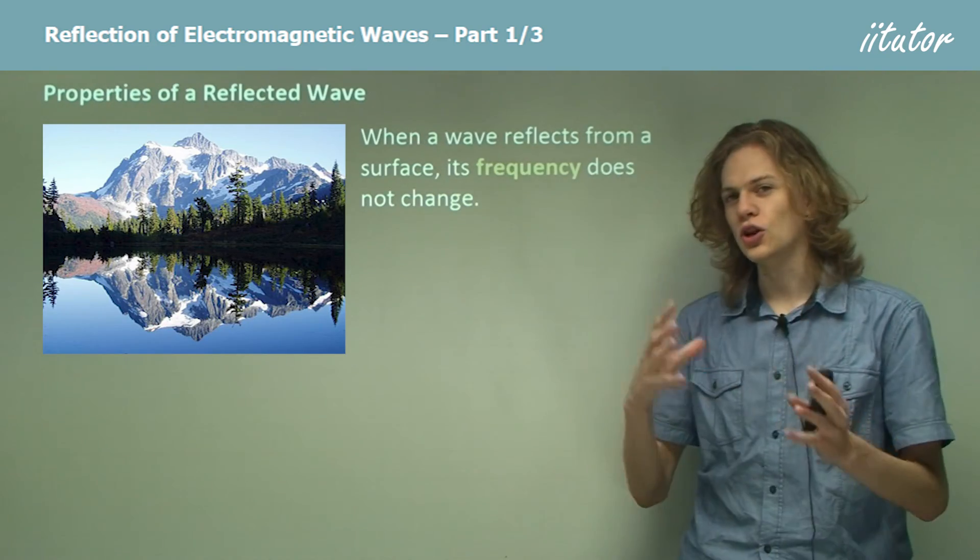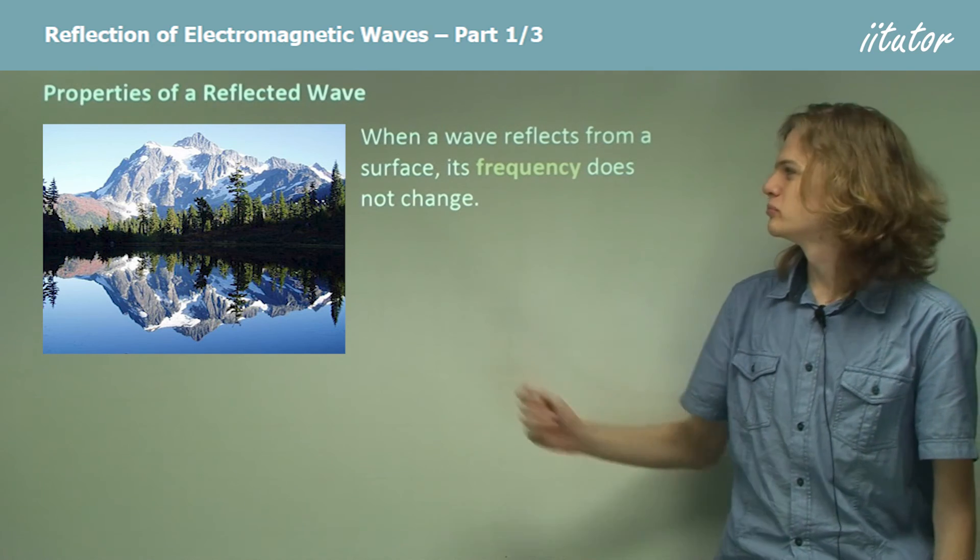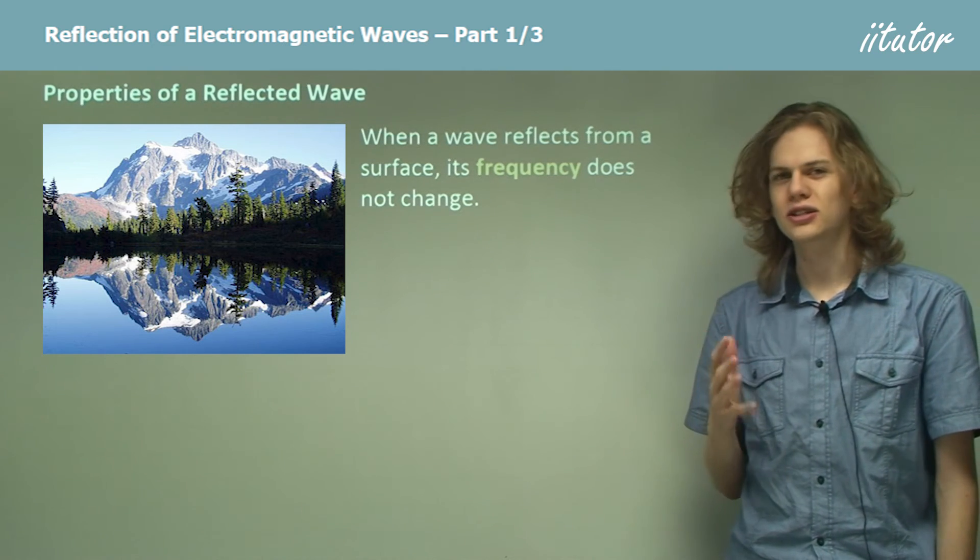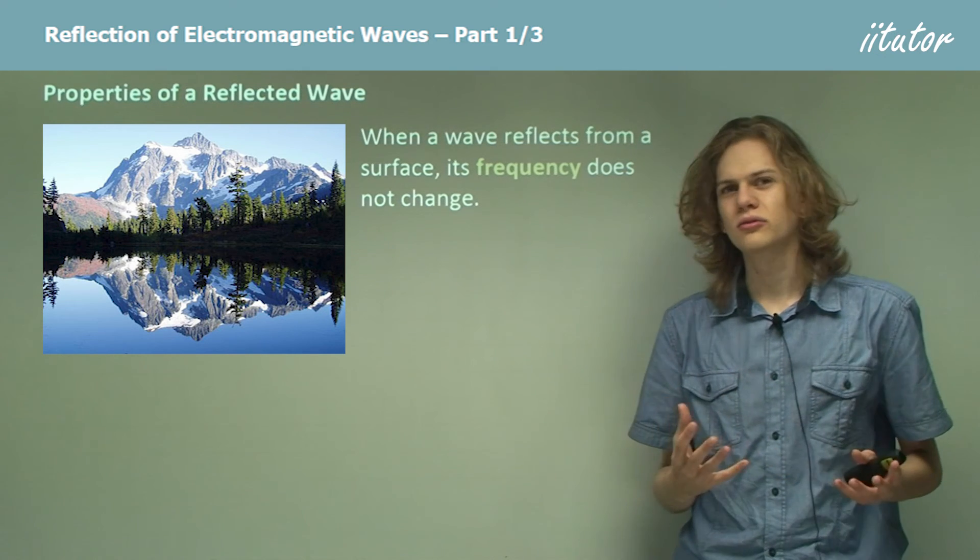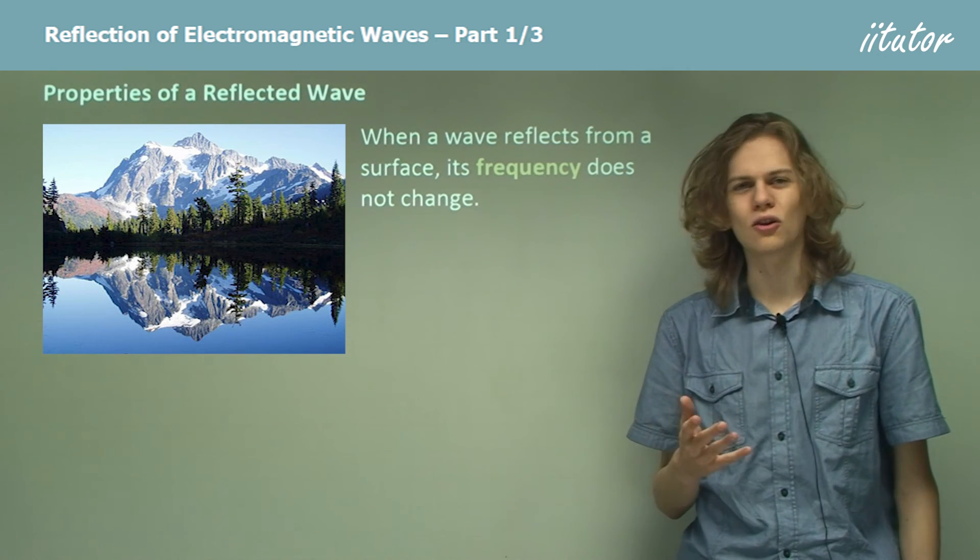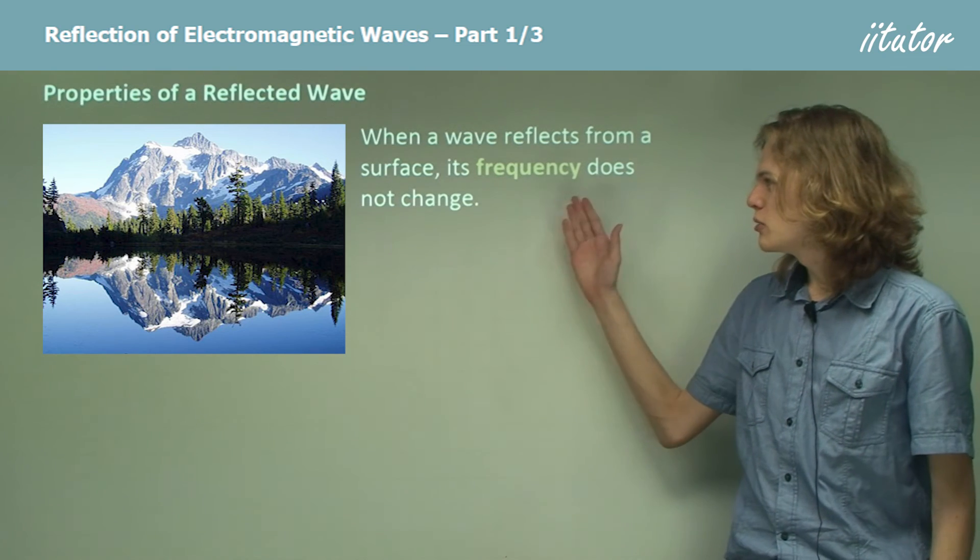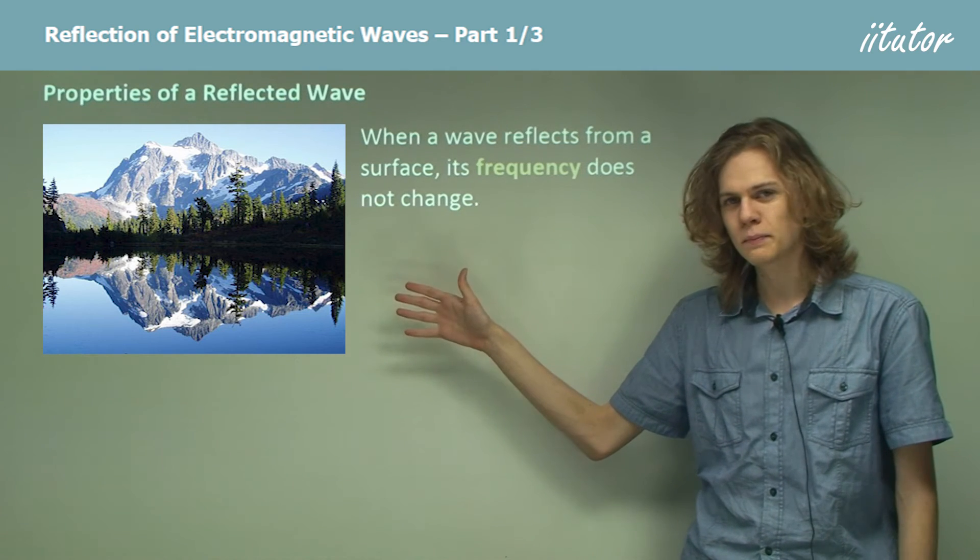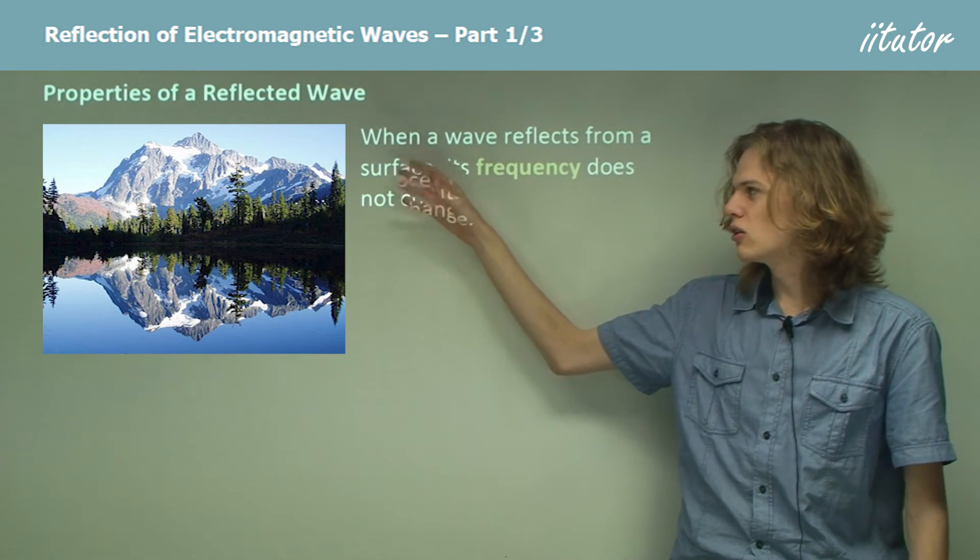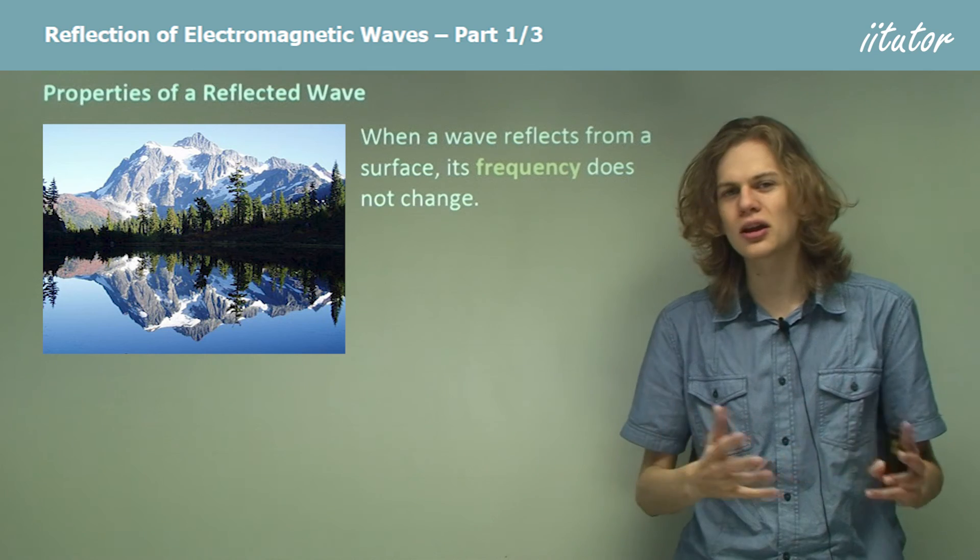When a wave is reflected from a surface, such as a pool of water, its frequency doesn't change. Can you remember what frequency controls in light waves? It controls the color of the light. So the frequency doesn't change, and this means that the color of the reflection will be the same as the color of the incident ray that created it.